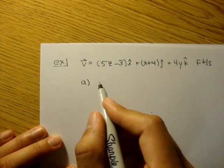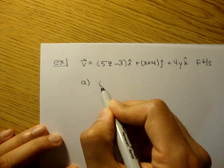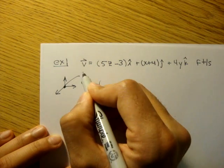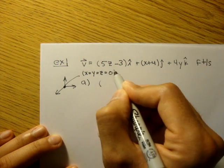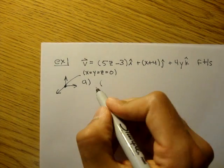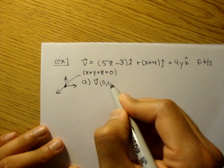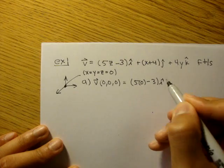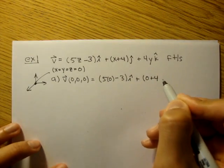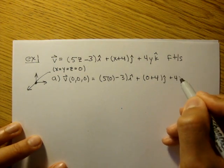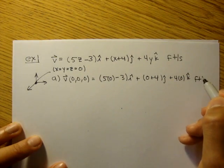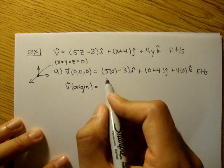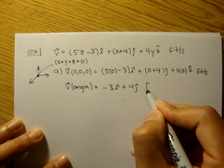So the first part, we'll call it part a — it's asking for the speed at the origin. At the origin of our coordinate system, x is equal to y is equal to z is equal to 0, they're all 0. So we can plug that in. The speed at (0, 0, 0) is equal to 5 times 0 minus 3 in the i, plus 0 plus 4 in the j, plus 4 times 0 in the k, feet per second. So the velocity at the origin is equal to negative 3i plus 4j feet per second.